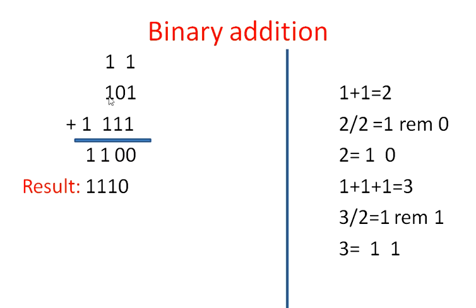So, if you have 1, 0, 1, 1, 1, 1 — I will show you the number of numbers. 1 plus 1 equals 2. This is the binary number.